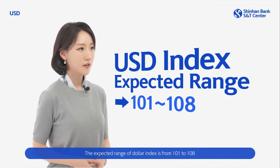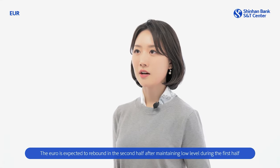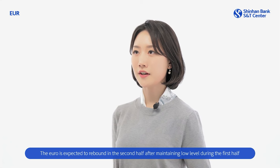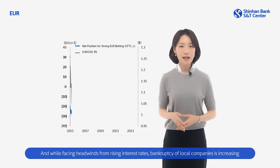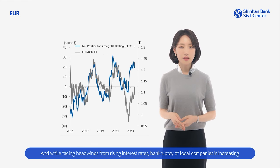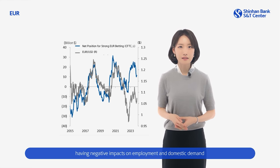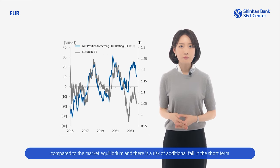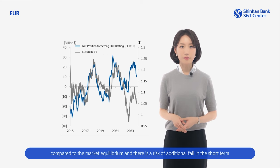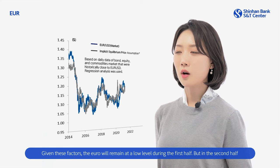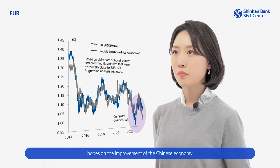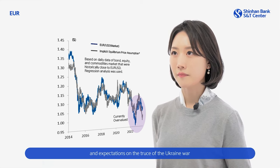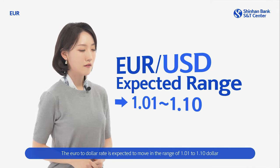The euro is expected to rebound in the second half after maintaining a low level during the first half. Reflecting the decline in demand, major countries in Europe are adjusting growth consensus for next year downward, while facing headwinds from rising interest rates, increasing bankruptcy of local companies, and negative impacts on employment and domestic demand. Inflation will be slowed down, though at a slower pace. The euro is still considered to be overvalued compared to market equilibrium, and there's a risk of additional fall in the short term. But in the second half, the euro is expected to rebound on a relatively hawkish ECB, hopes on the improvement of the Chinese economy, and expectations of a truce in the Ukraine war. The euro-to-dollar rate is expected to move in the range of $1.01 to $1.10.